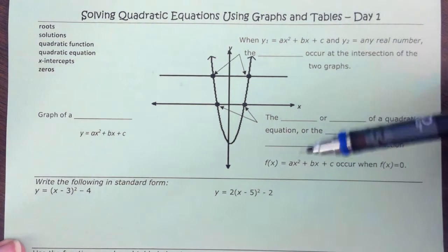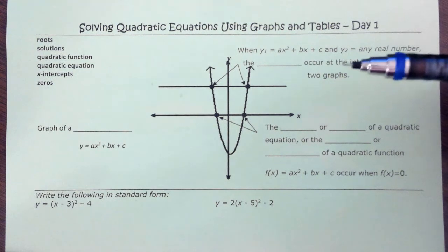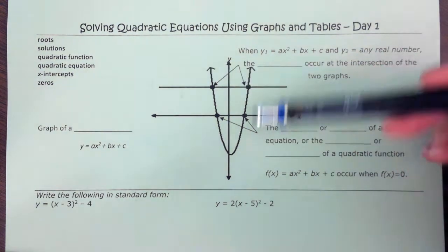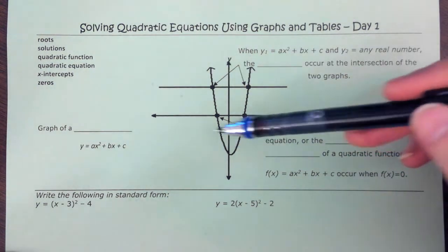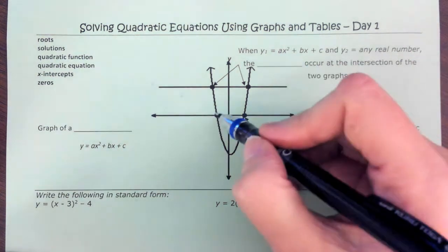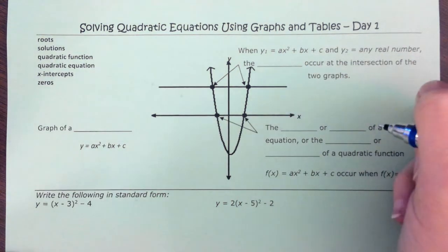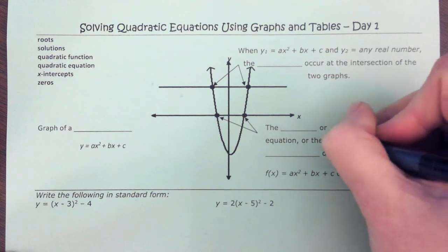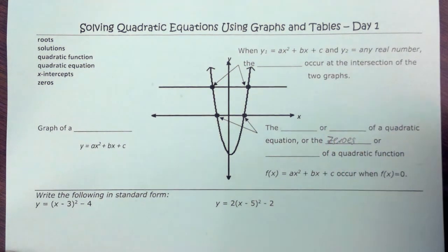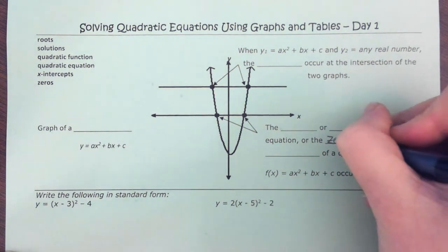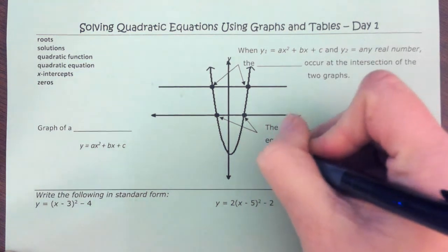Up until now, we've been talking about quadratic functions in terms of their properties. Like, what do we call the values where they cross x? We call those zeros. We call them x-intercepts.